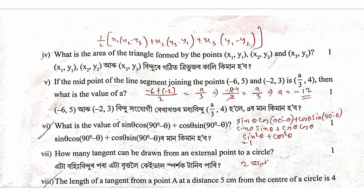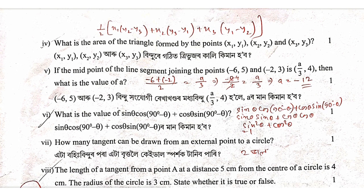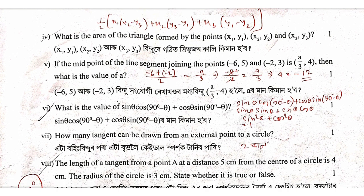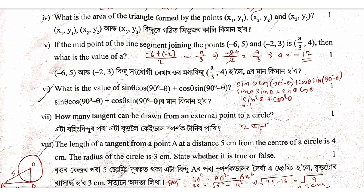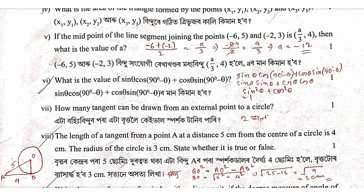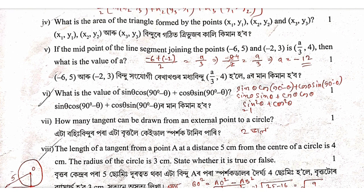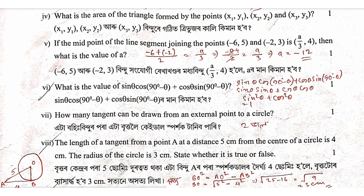If the midpoint of the line segment joining the points minus 6, 5 and minus 2, 3 is a by 3, 4, then what is the value of a? Using the midpoint formula, x coordinate equals x1 plus x2 by 2. With x1 as minus 6 and x2 as minus 2, we get a equals minus 12.